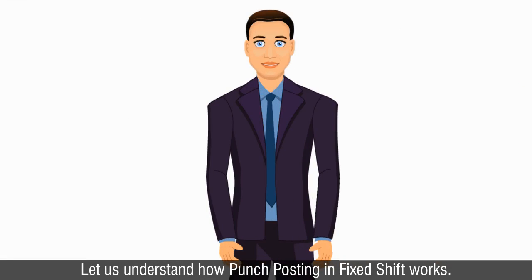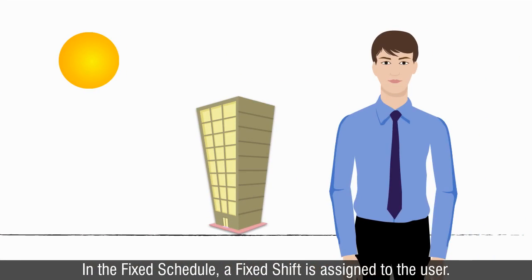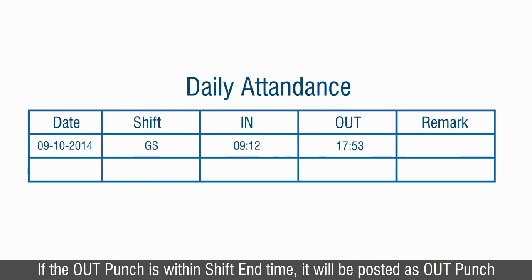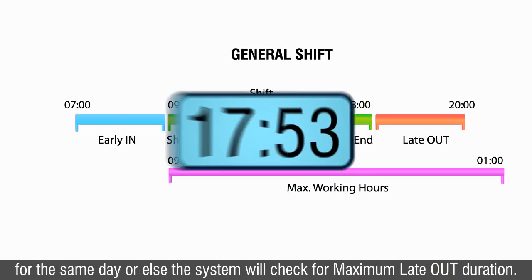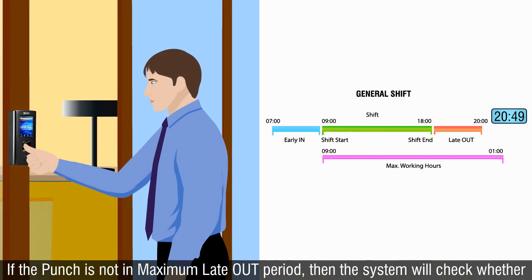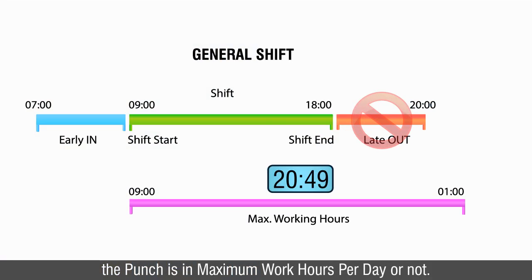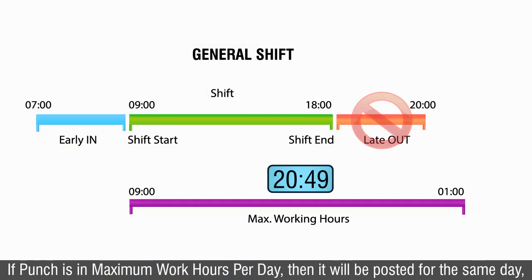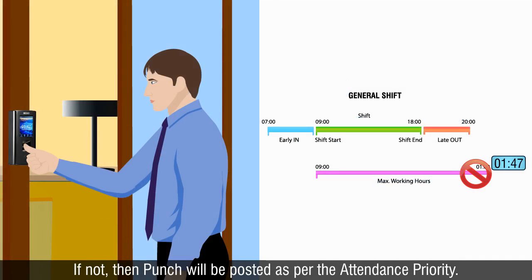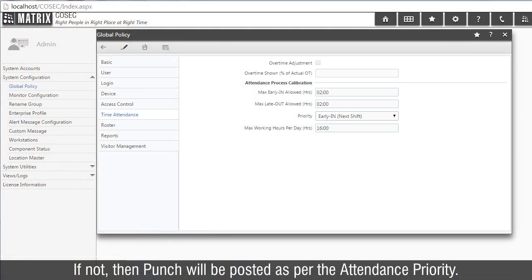Let us understand how punch posting in fixed shift works. In the fixed schedule, a fixed shift is assigned to the user. If the out punch is within shift end time, it will be posted as out punch for the same day, or else the system will check for maximum late out duration. If the punch is in the maximum late out period, it will be posted for the same day. If not, the system will check whether the punch is in maximum work hours per day. If punch is in maximum work hours per day, it will be posted for the same day. If not, the punch will be posted as per the attendance priority.